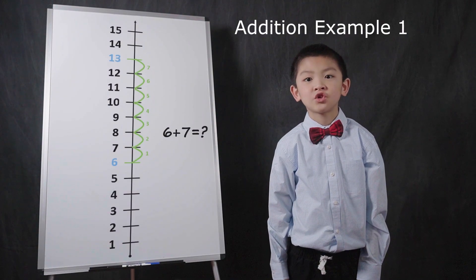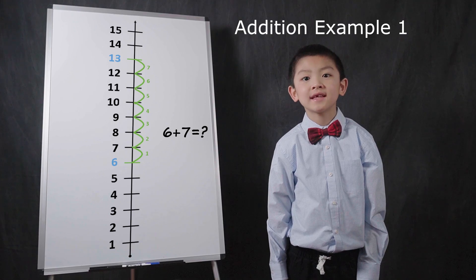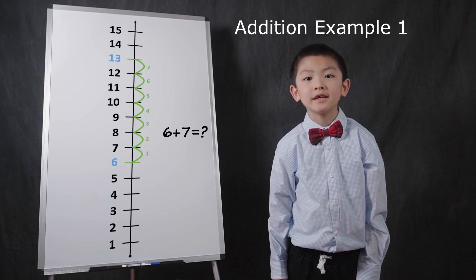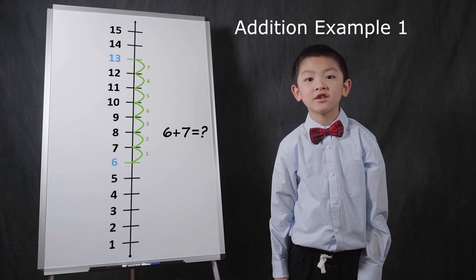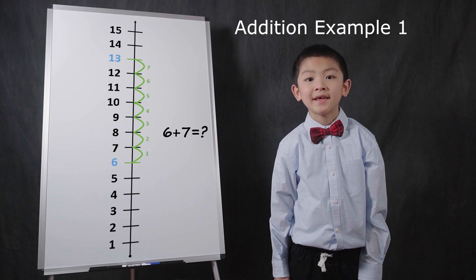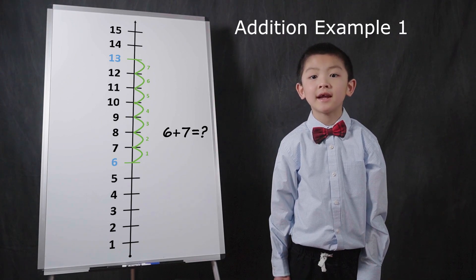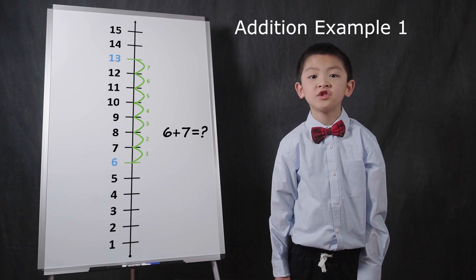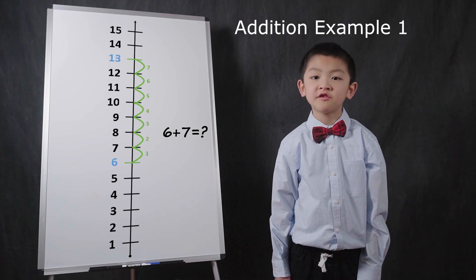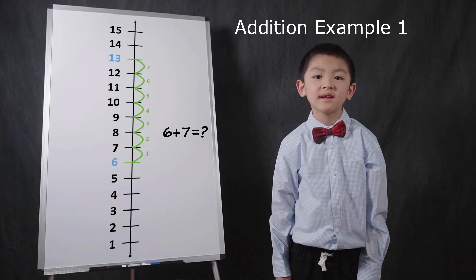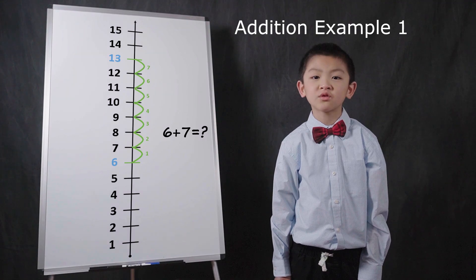Using number lines for addition is like counting up on a number line. You mark the first add-in on the number line, which is 6, and you just count up by the second add-in, which is 7. On the number line, you'll end up with 13, so 6 plus 7 equals 13.